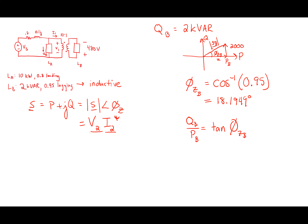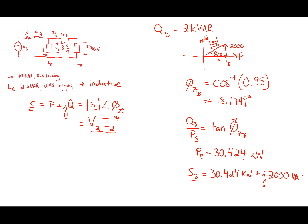If I solve for P_B using the tangent relationship, I get P_B equals 30.424 kilowatts. So the whole complex power vector S_B equals 30.424 kW plus j times 2000 VARs.